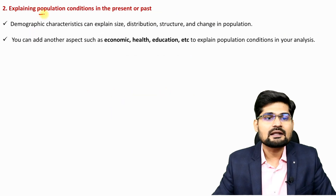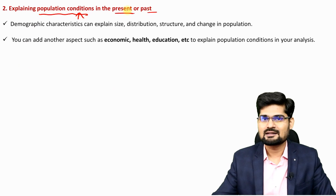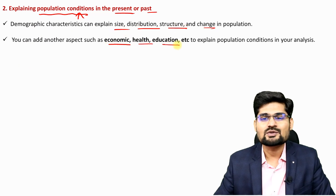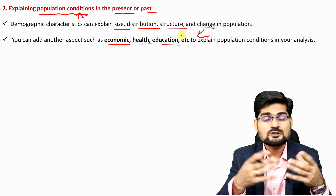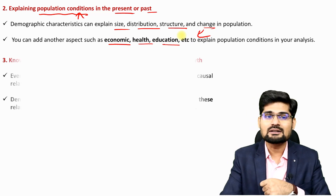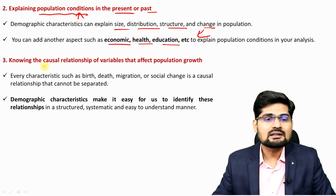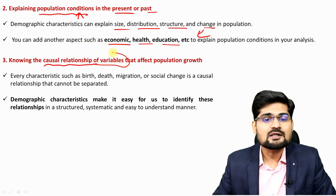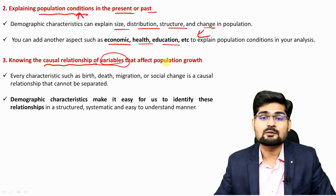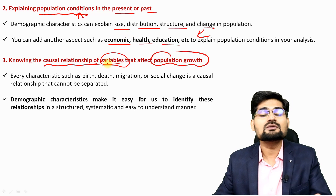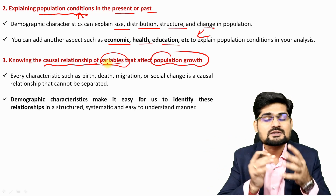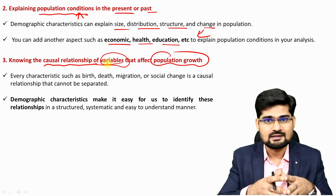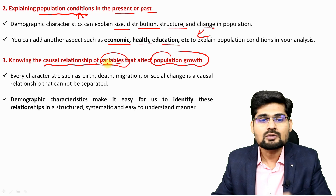The second reason is explaining population conditions in the present or past — size, distribution, structure, change, economic conditions, health, education — the qualitative aspects are also gained through this. The third important reason is knowing the causal relationship: what is the cause, the effect, the consequences. These variables tell us the causal relationships of variables that affect population growth — why growth is concentrated somewhere, why dispersed elsewhere, why there is explosion of growth in developing countries, and what the challenges are in developed countries.